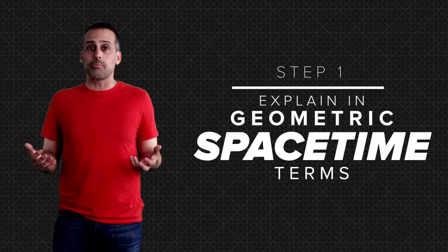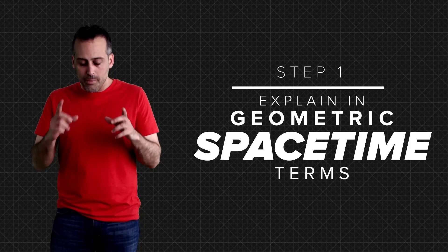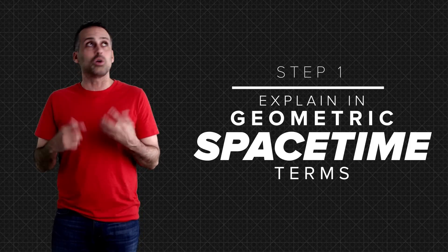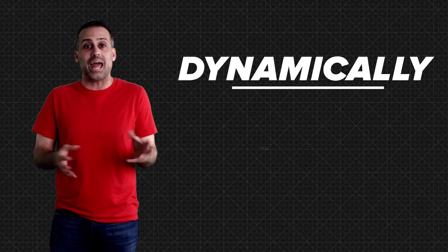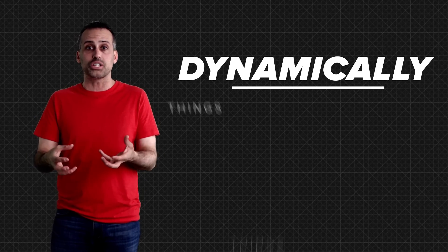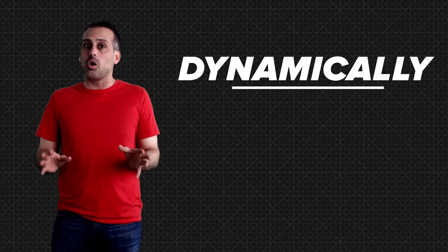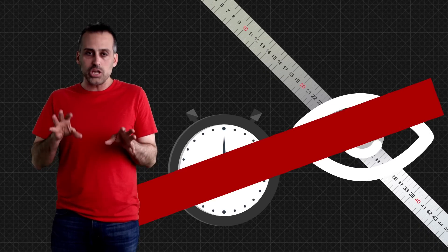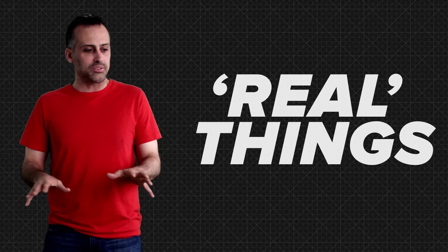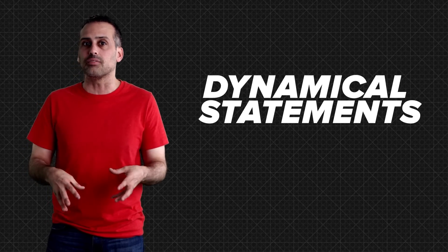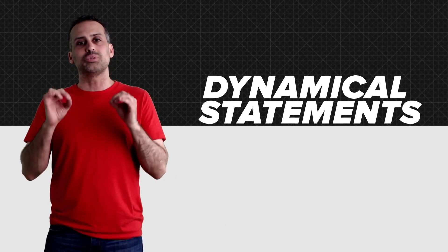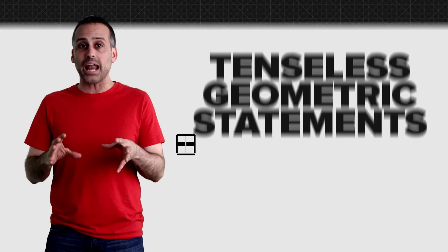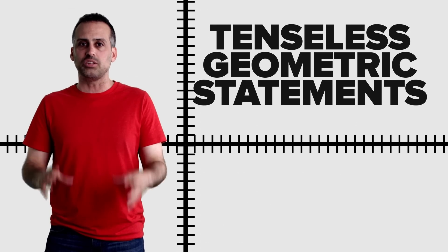Step one is to express both Newton's and Einstein's viewpoints in geometric spacetime terms, since that's the only way to compare them in a reliably objective way. Remember, humans experience the world and talk about the world dynamically as things moving through space over time. But even in a world without gravity, we already know that clocks, rulers, and our eyes can all mislead us. So to be sure we're talking about real things, as opposed to just artifacts of our perspective, we have to translate dynamical statements into tenseless statements about static geometric objects in 4D spacetime.